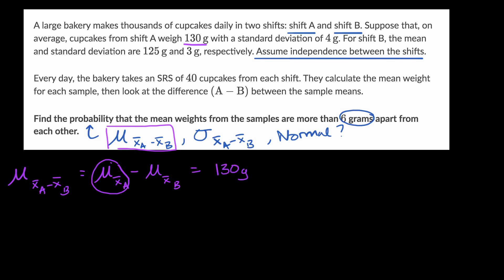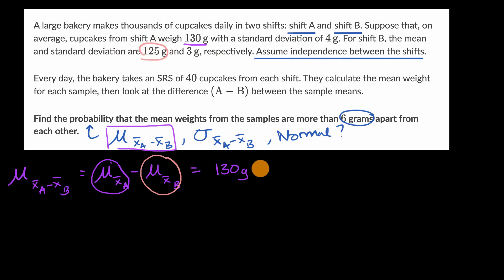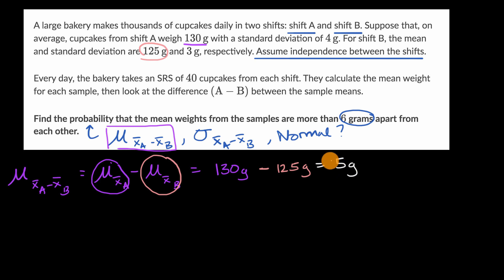The mean of the sampling distribution for shift B is just the population mean for shift B, which is 125 grams. So we subtract: 130 minus 125, which equals five grams. We've answered the first part — the mean of the sampling distribution of the difference in sample means is five grams.